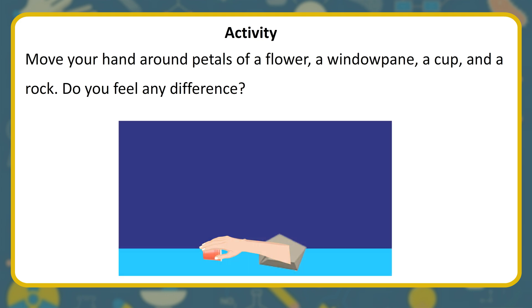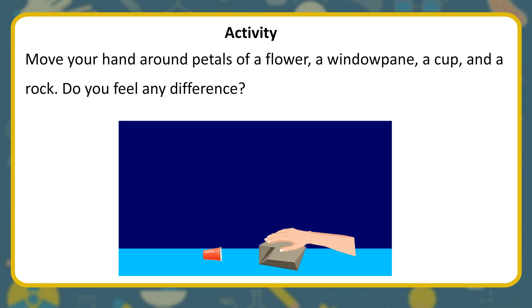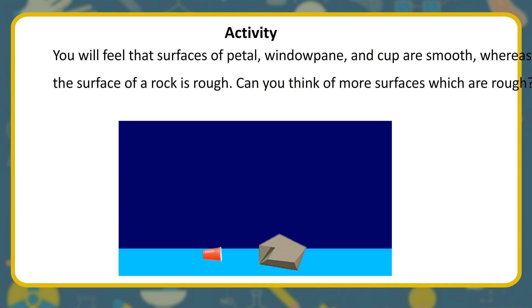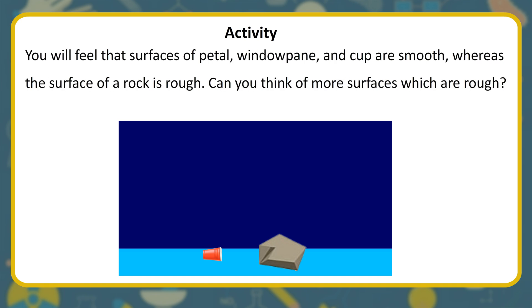Activity: move your hand over petals of a flower, a windowpane, a cup, and a rock. Do you feel any difference? You will feel that the surfaces of the petal, windowpane, and cup are smooth, whereas the surface of a rock is rough.